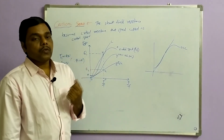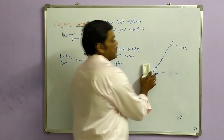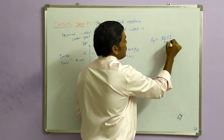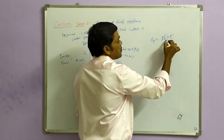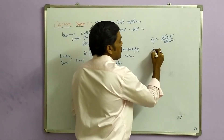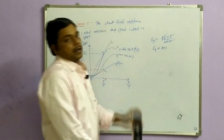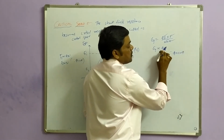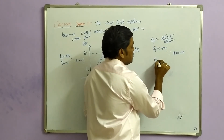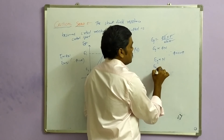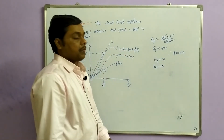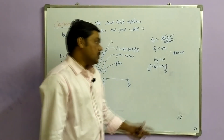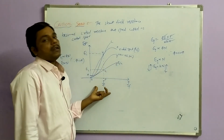How do you determine this critical speed? We know the relation between generated EMF, flux, and speed: EG = φZNP divided by 60A. Since number of conductors, poles, 60, and parallel paths are all constant, EG is proportional to φ × N. By keeping flux constant, EG is proportional to speed. If EG increases, speed increases; if speed decreases, EG also decreases. We utilize this condition to determine the critical speed.